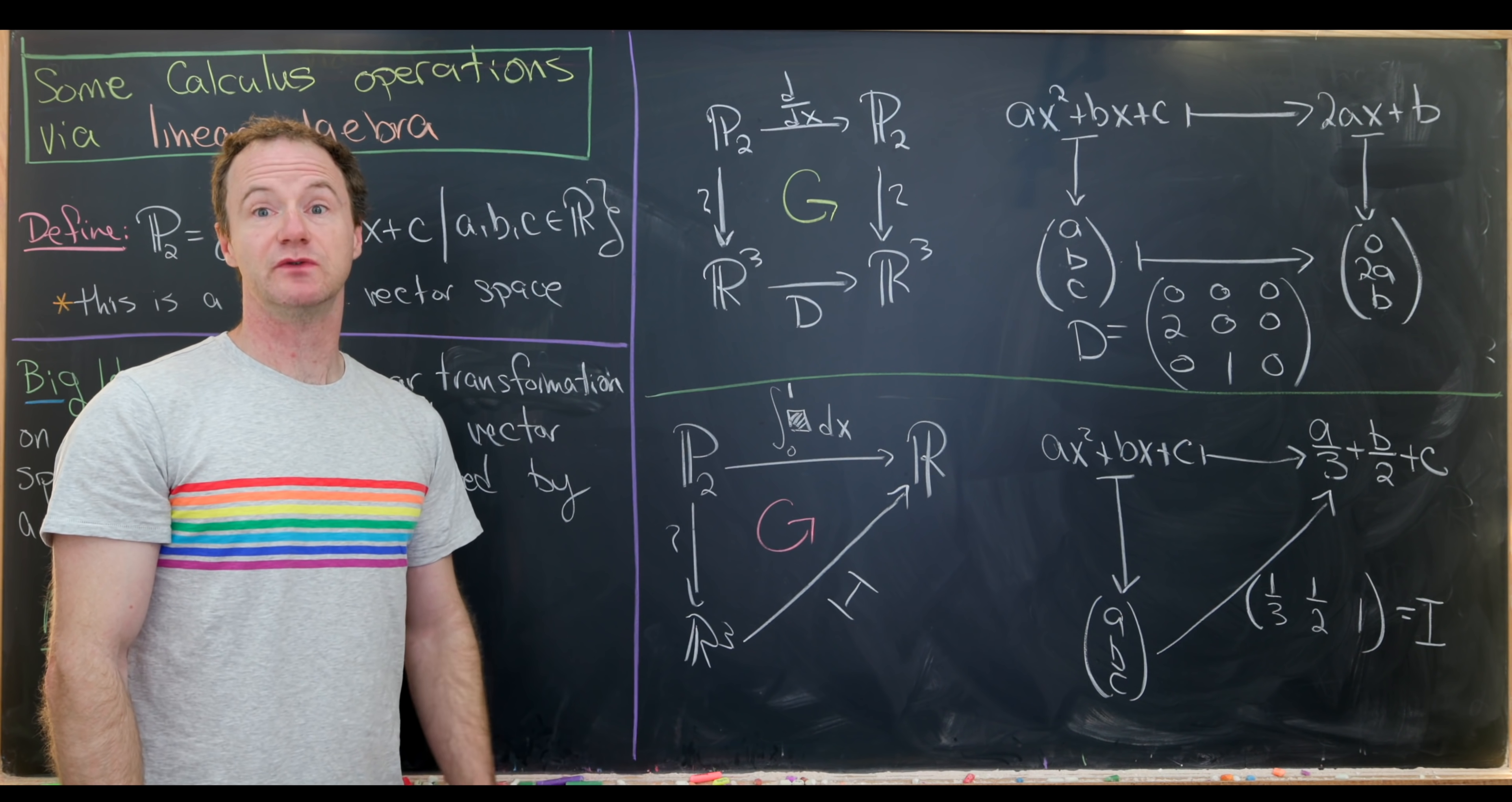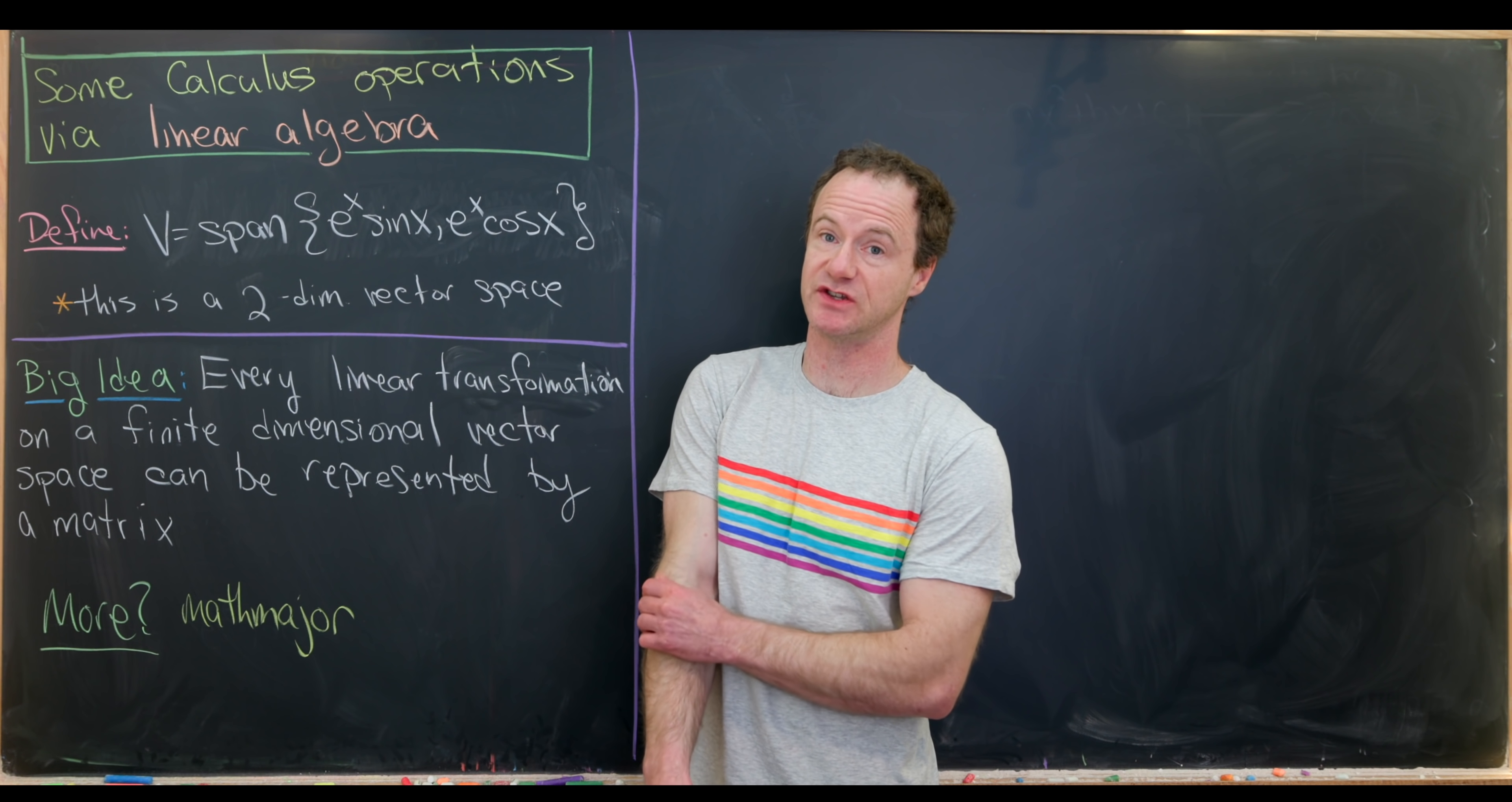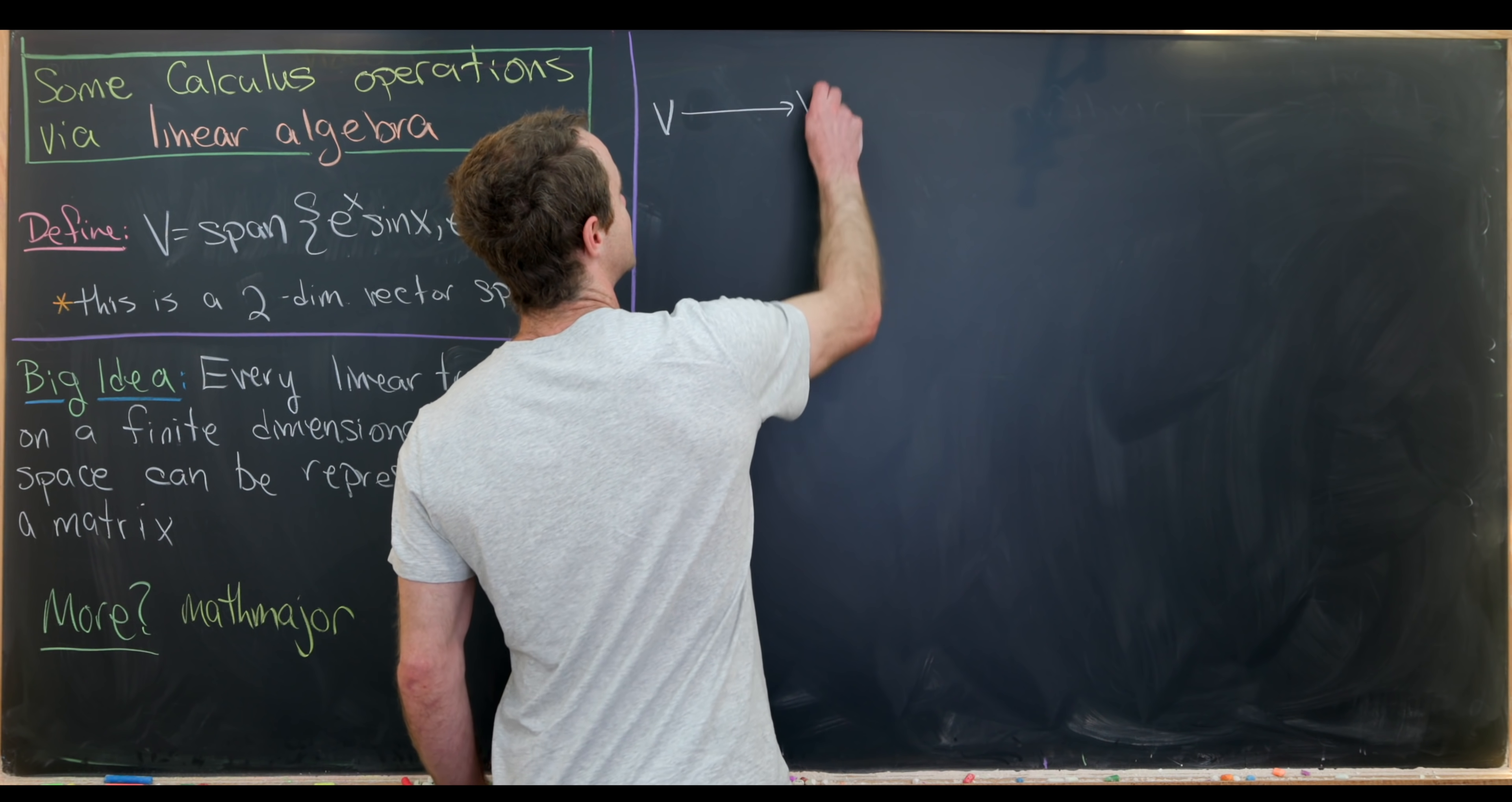Let's get rid of this and we'll do another example. So for our next example, let's change the vector space that we're working with. We'll set v equal to the span of e to the x times sine x and e to the x times cosine x. Recall that the span is just all linear combinations of these two functions. So this is clearly a two-dimensional vector space because we have two basis vectors here. So now let's do the same kind of thing.